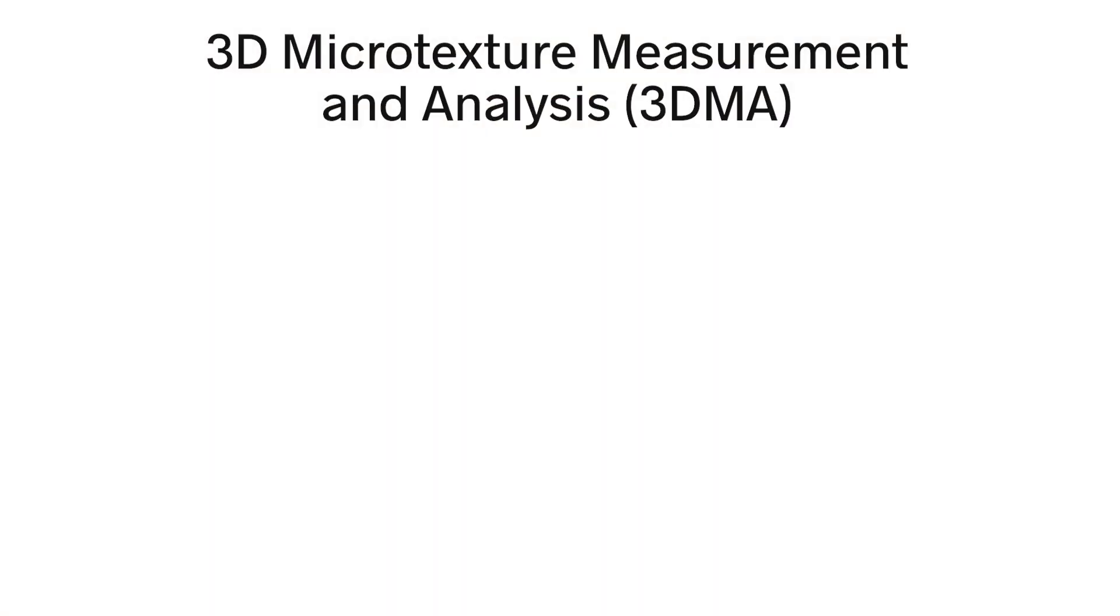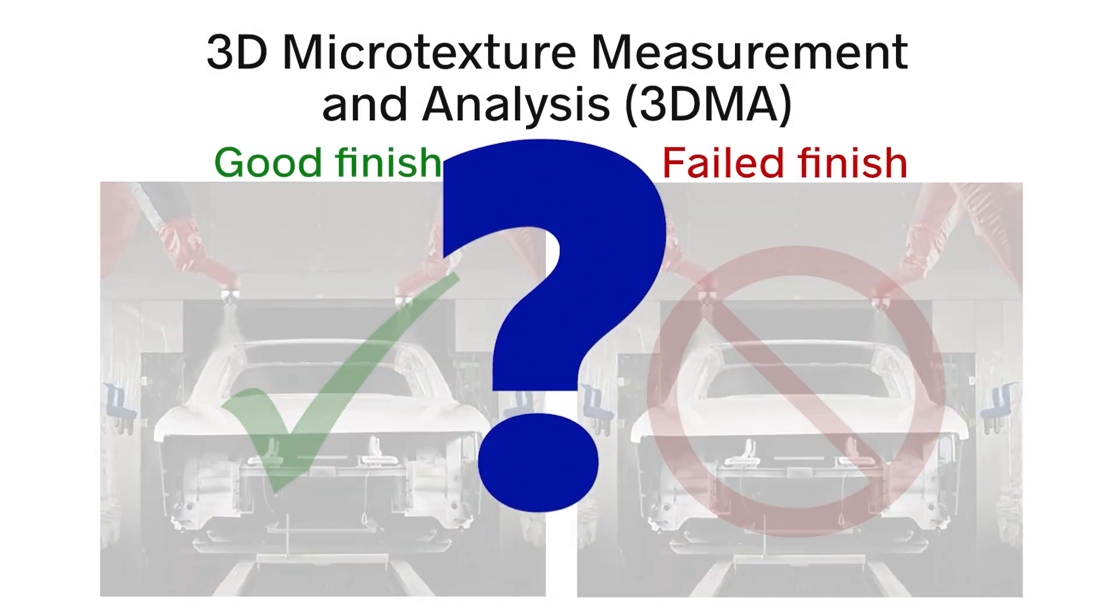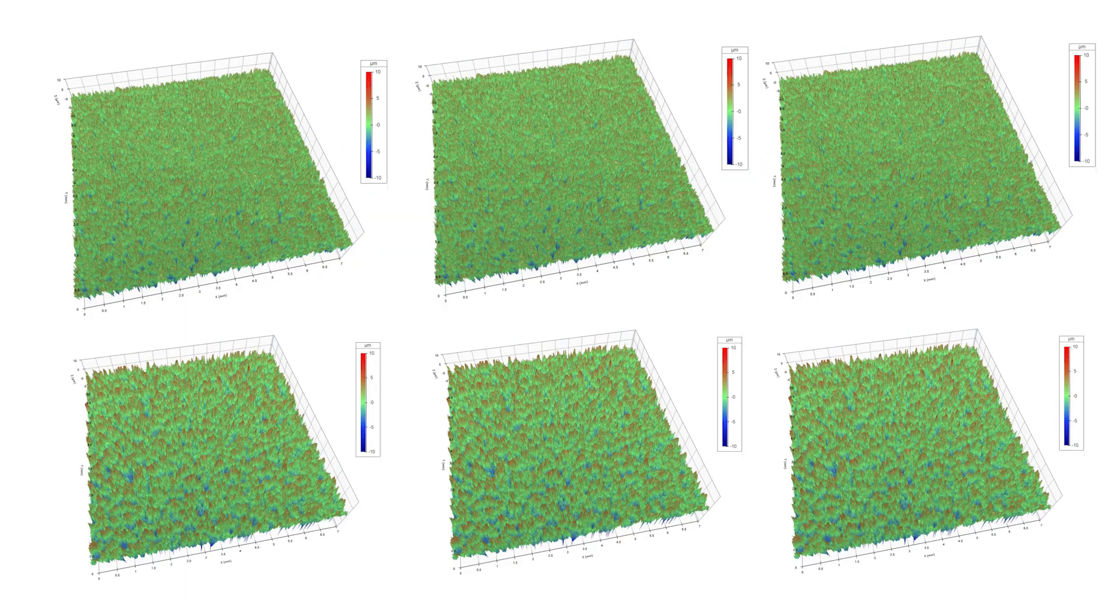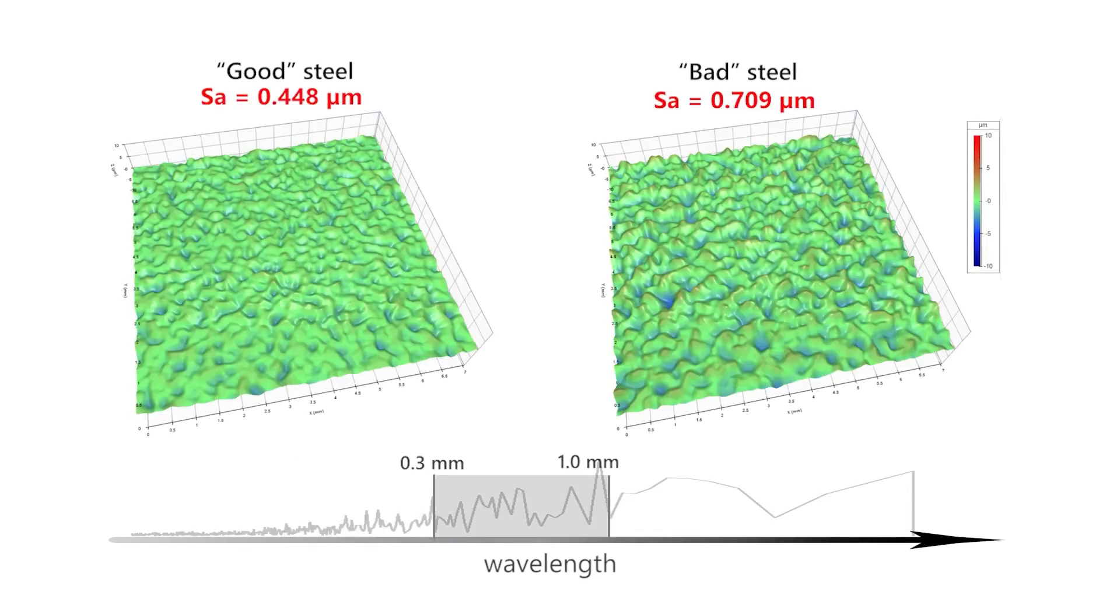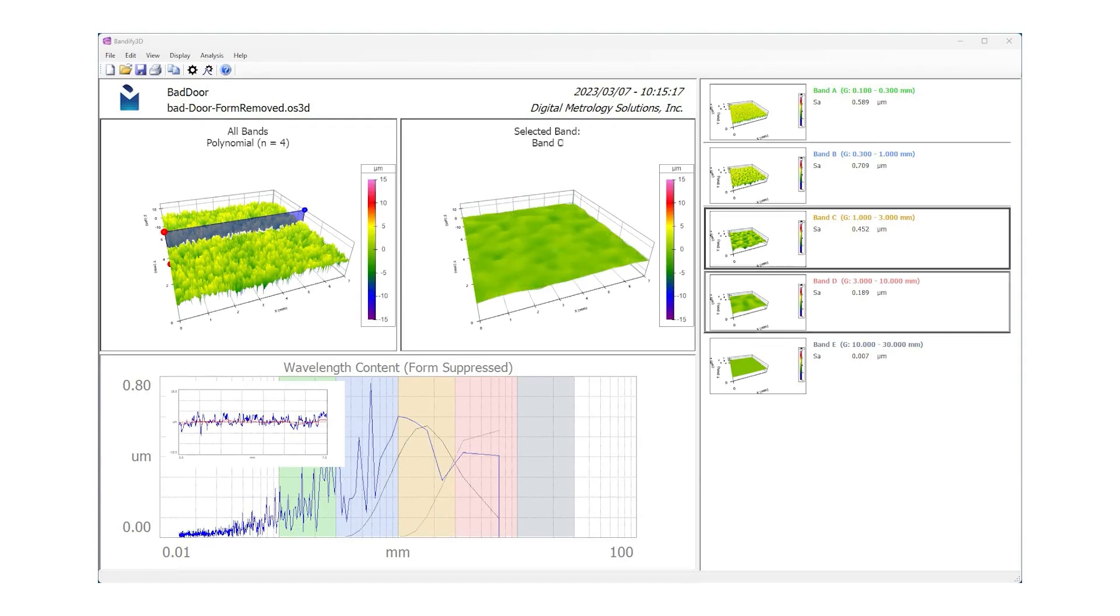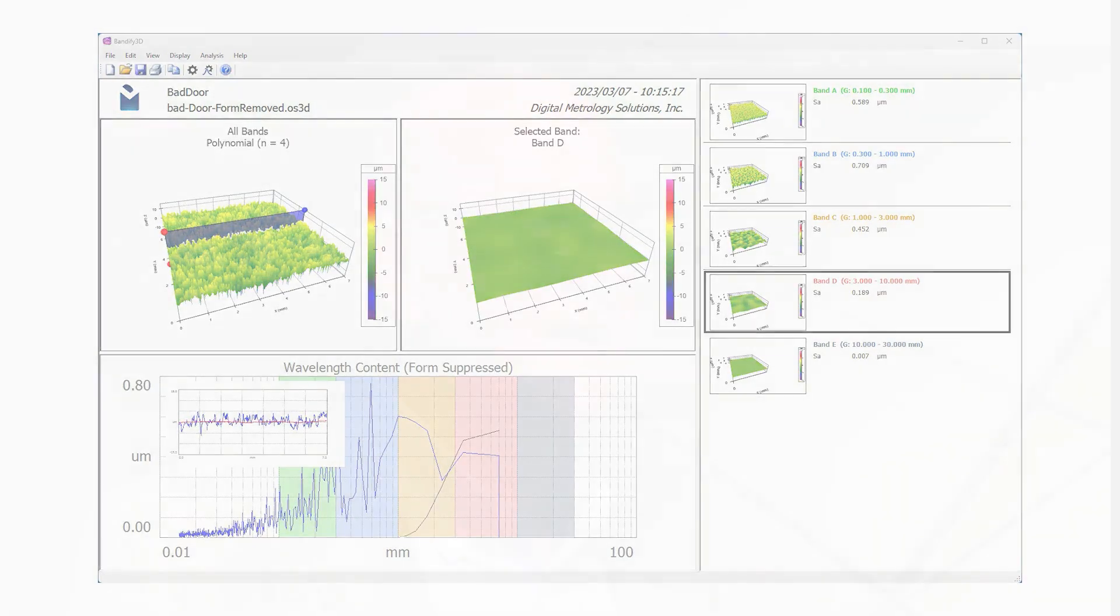I really provide two types of projects. One is what I call 3D micro texture measurement and analysis where someone needs to solve a problem and do some research. We usually start with three good parts and three bad parts, and then I take a look at them and see what I can see in the surface finish that might predict a good part or a bad part. Once we can quantify the surface texture and relate it, then we can test and see if that surface texture really is the cause of a problem or just happens to correlate.